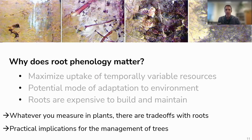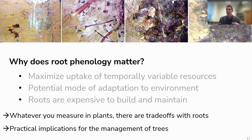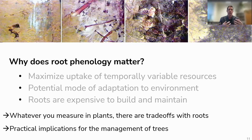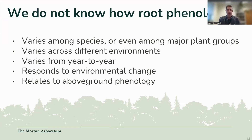Whatever you measure in plants — leaves, stems, other ecosystem processes — there are absolutely trade-offs with the roots. Even if you're not measuring roots themselves, having a better handle on that carbon allocation sent below ground is important for understanding trade-offs within a plant within a season, but also across the lifespan of that plant. This has practical implications for tree management as well — for example, in the southeast United States we often fertilize timber plantations at different time points, and knowing how and when roots are growing could help us do a better job.